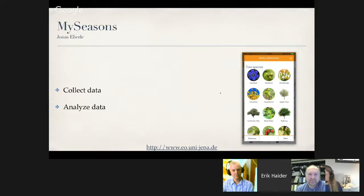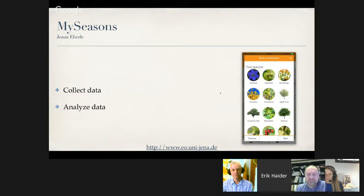The second application I want to describe is the MySeasons app. If you watched the webinar on Monday or some of the Periscope sessions, this app should be familiar. MySeasons is an application developed by the Department for Earth Observation of the Friedrich Schiller University in Germany. The app lets you analyze the start, length, and end of the growing season and long-term vegetation analysis from an archive of satellite data on environmental changes. Users can collect data using GPS, camera, and optional contact information. This app is also available on Apple's App Store and Google Play Store.